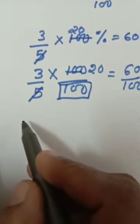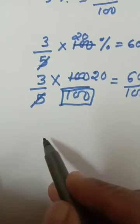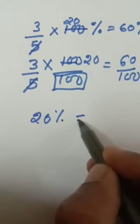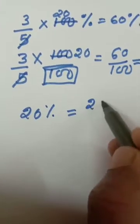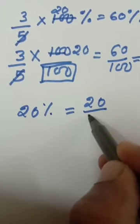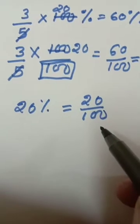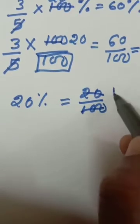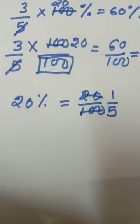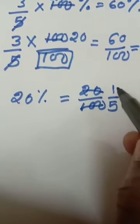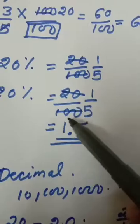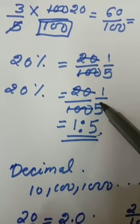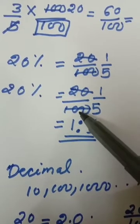Next concept: convert into fraction. 20 percentage — you want to convert into fraction. 20 percentage means divided by 100, so it becomes 20 by 100. That is a fraction. Further you want to cut out, you can cut out. 20 by 100 is also a fraction, which simplifies to 1 by 5. Any one form — 20 by 100 or 1 by 5 — both forms are correct. 20 by 100 is a fraction.